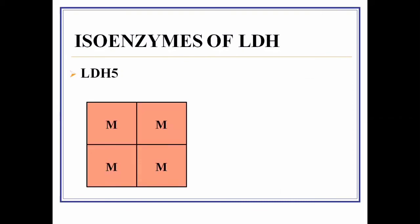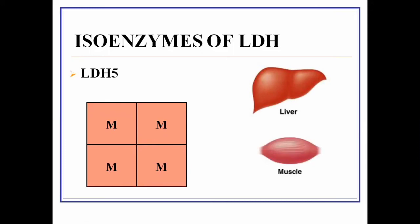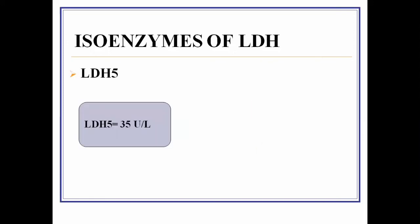LDH5 is made up of four M-type polypeptide chains. LDH5 is tissue specific for the liver and muscles, and a minute quantity is also present in the blood. The normal value in blood is 35 units per liter. Values exceeding this indicate pathologies of the liver and muscle cells.